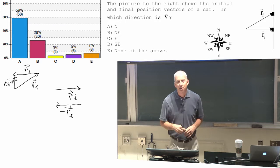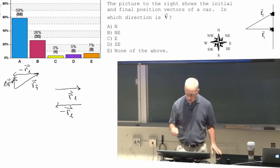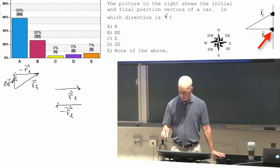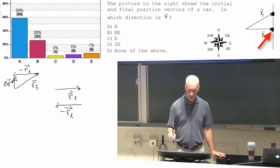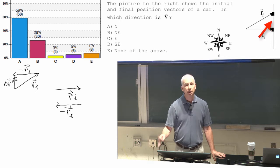But you could also think about the problem. This is a picture of a car from above driving on a straight road. Earlier in time, R initial, it's here. Later on, it's there.